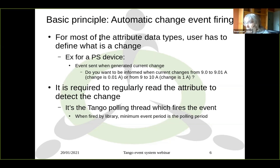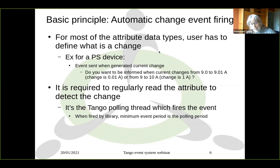To be precise, the change definition is not required for all data types. If your attribute is a string, there is no way to define the change. Or if it's a Boolean, it's useless to define the change. But for most data types — like float, integer, double — you have to define the change.